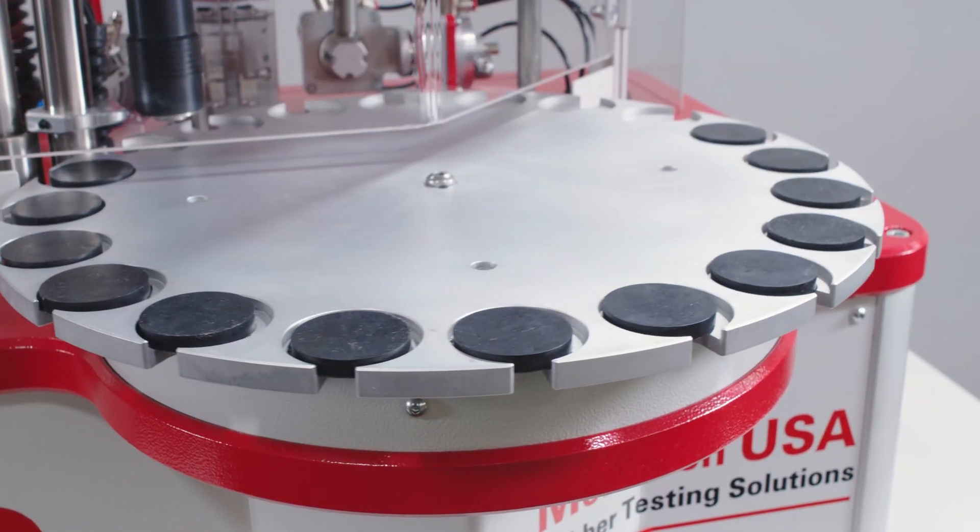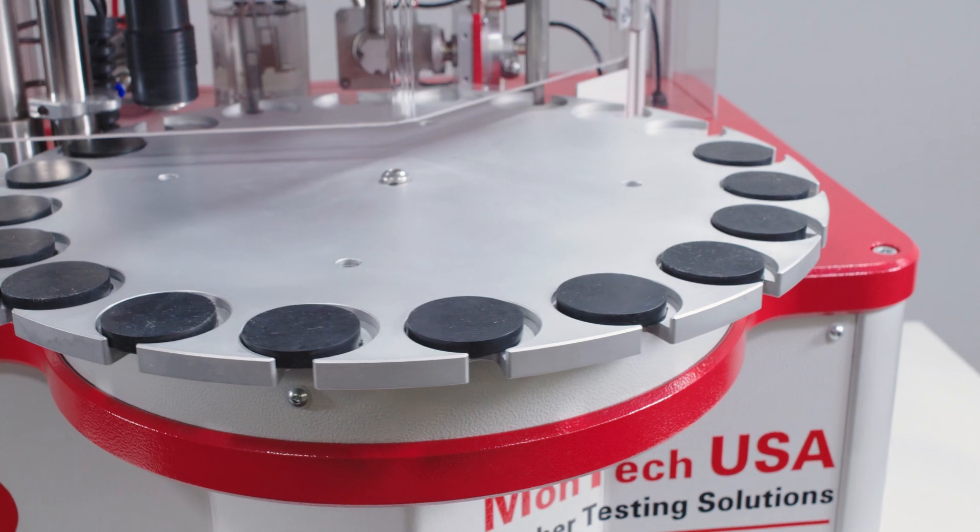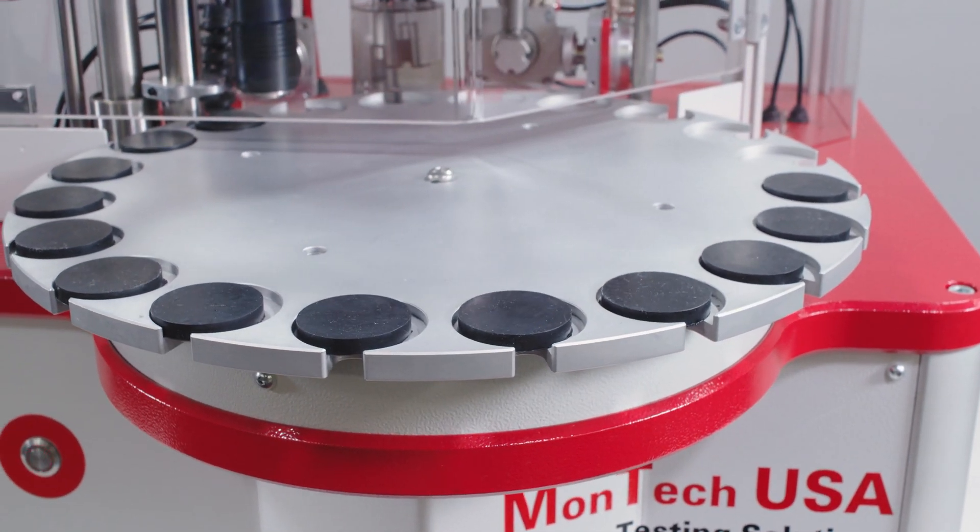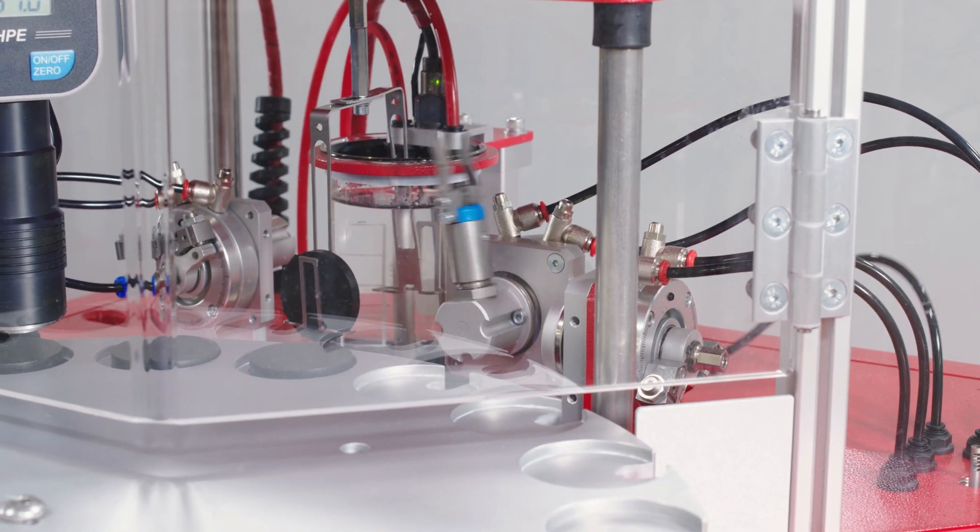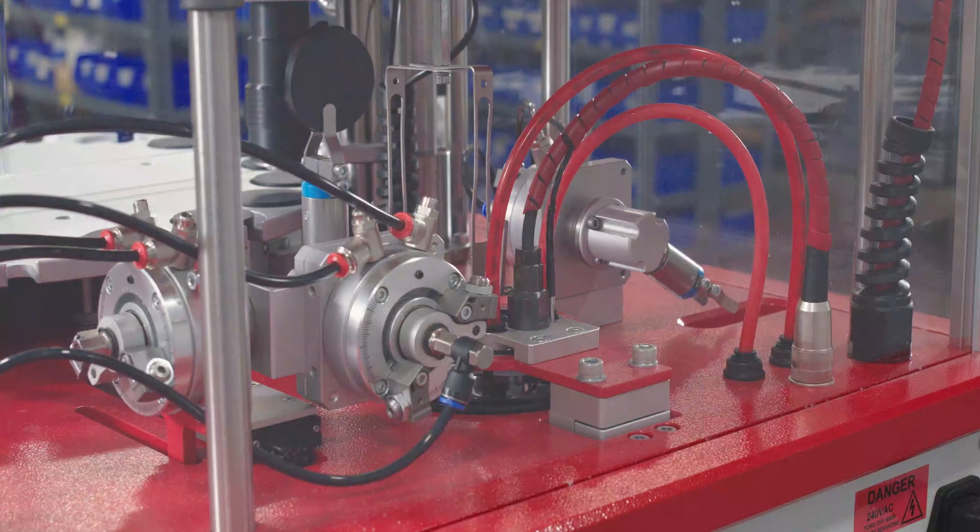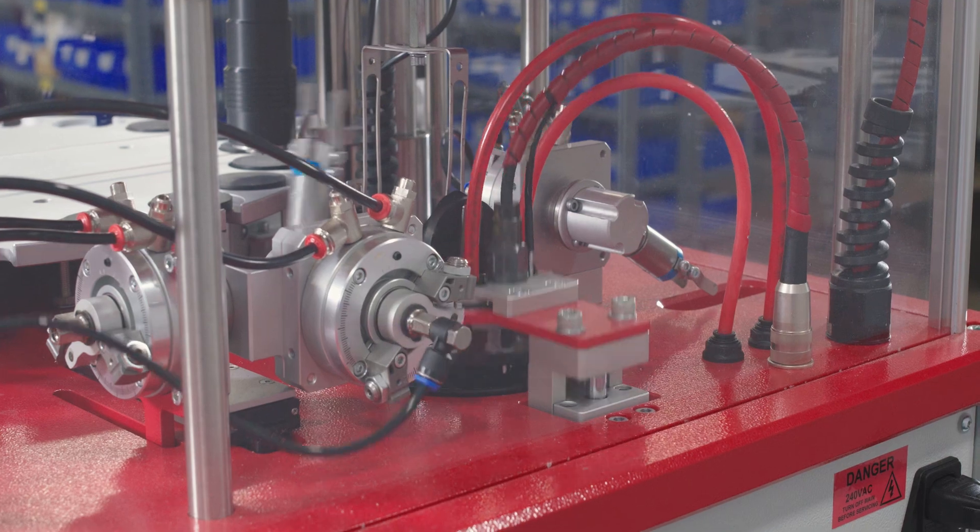The H&D 3000's rotary tray automatically takes the samples through the sequence of hardness and density tests, first testing hardness, then density. This rotary design allows for samples to be continuously loaded, meaning there is never a need for breaks between testing.